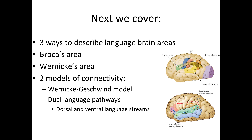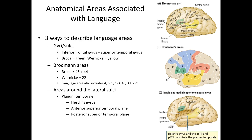Current ideas about where in the brain language processes are located come from several basic lines of inquiry: anatomical studies, studies of brain lesions in human patients, studies of brain stimulation in awake human patients (often those with epilepsy), and brain imaging studies. However, our knowledge of which brain regions account for different parts of language is very far from complete, and research on this topic is ongoing.